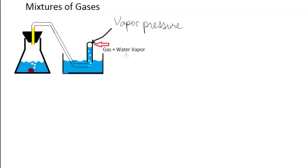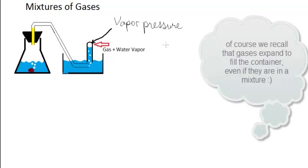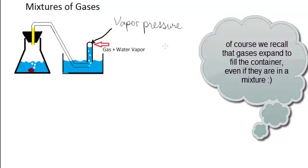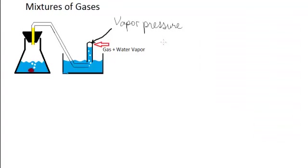If we wanted just the pressure of the hydrogen or the volume of the hydrogen, well actually the volume of the hydrogen is the entire container, but if we wanted just the pressure of the hydrogen in order to use PV equals nRT with it, then we would need to subtract off the water vapor pressure.